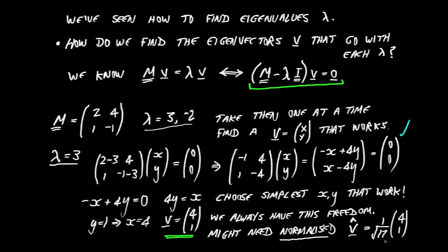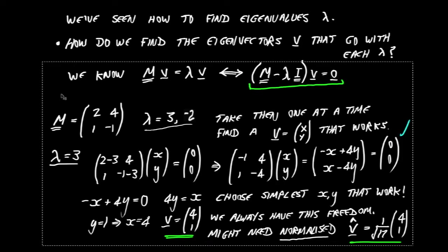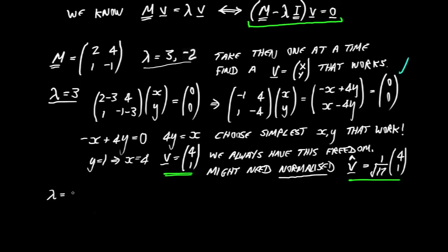That's our eigenvector and a normalized version of it. Now we still need to find the eigenvector for the other eigenvalue, minus 2. We do exactly the same procedure — subtract minus 2 on the diagonal: 2 minus minus 2, and 4, and 1, minus 1 minus minus 2. Lots of minuses there.